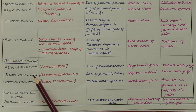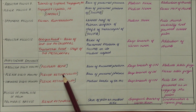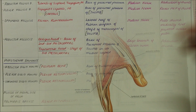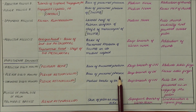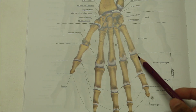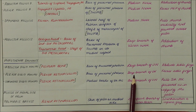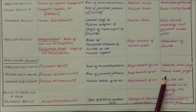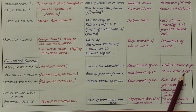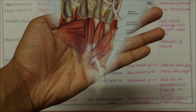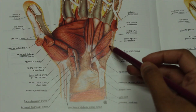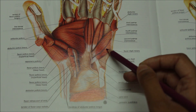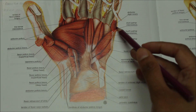Next we have the flexor digiti minimi. It originates from the flexor retinaculum and inserts into the base of the proximal phalanx. It is supplied by the deep branch of the ulnar nerve, and its action is flexion of the little finger.